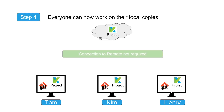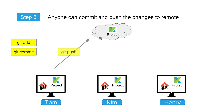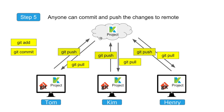Step four: everyone can now work on their local copies. The good thing about Git is that while working locally, they do not need to stay connected to the remote repository — even without an internet connection, they can still work on their local machines. Network connection is only required at the time of cloning, pulling, or pushing. Step five: after finishing their changes, they do git add, git commit, and git push to add their changes to the remote repository. Whenever they want the latest changes from others, they can do a git pull.